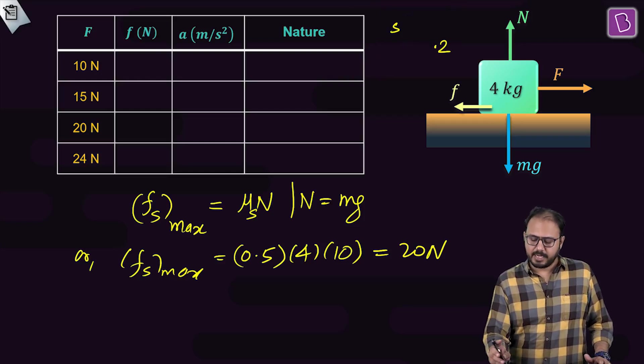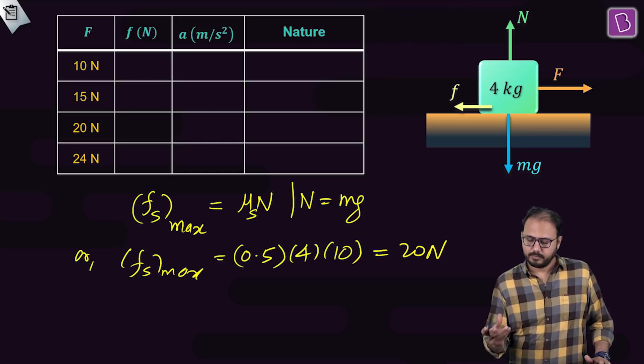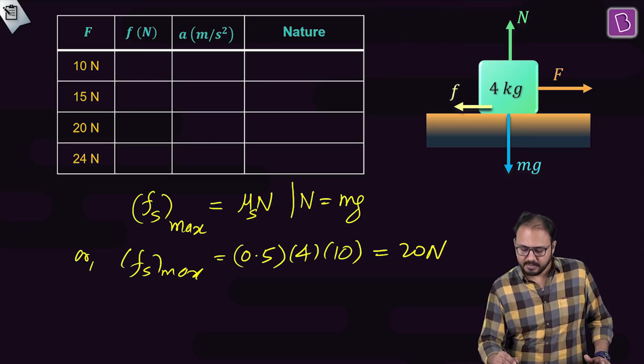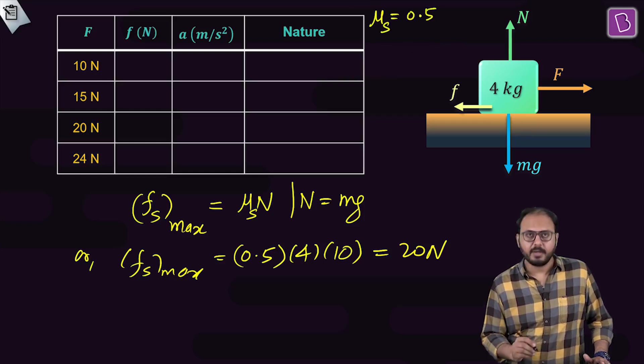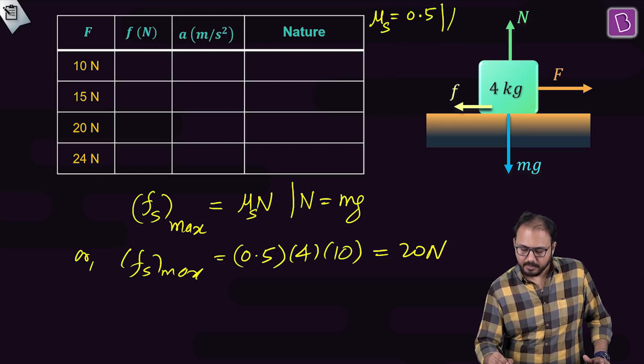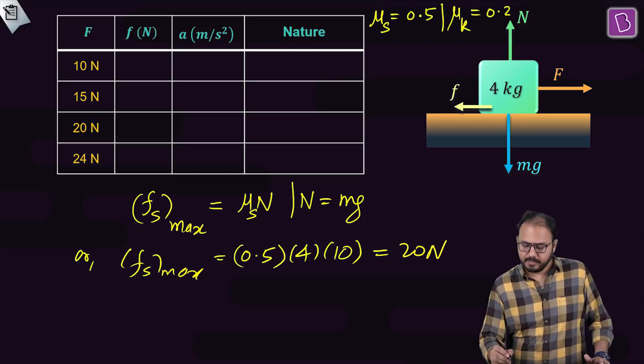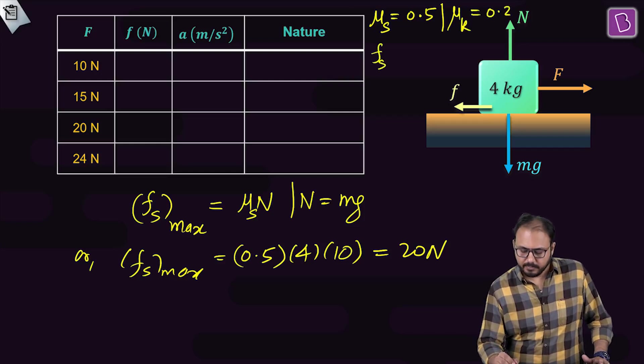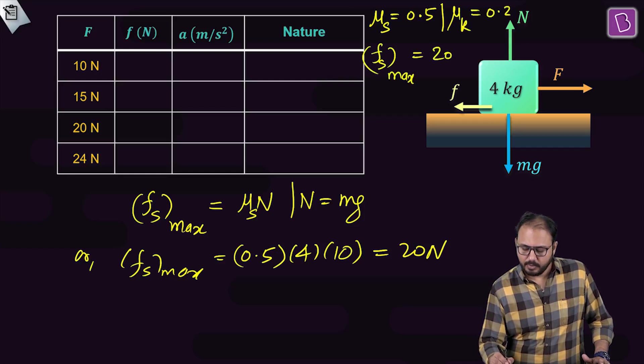I will write the given values again for you. So basically what I have is μs is equal to 0.5, μk is equal to 0.2, and fs max is equal to 20 newton.